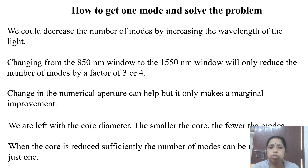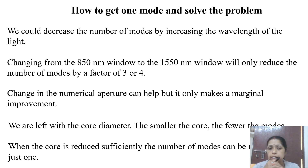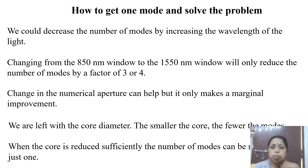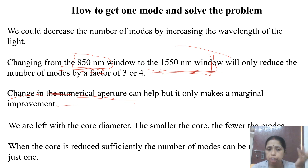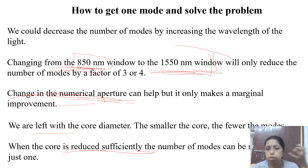To get single-mode behavior from a multimode fiber, one can use a higher wavelength optical signal. Higher wavelength light propagating through the fiber gives fewer modes. Nowadays, instead of 850 nanometer light, 1550 nanometer wavelength is preferred because it decreases dispersion. Changing the numerical aperture by changing the fiber diameter is also an option, though it is not easily possible once a fiber is already designed.